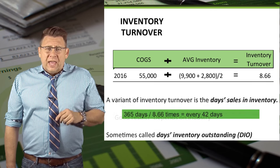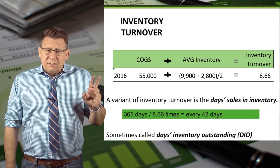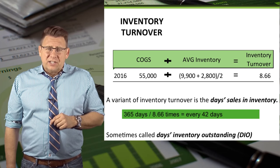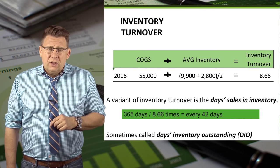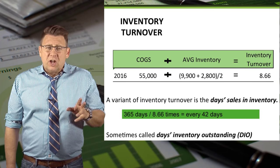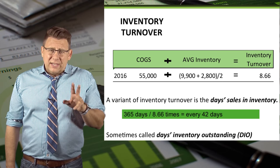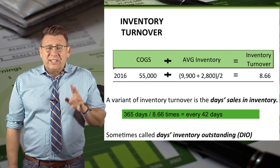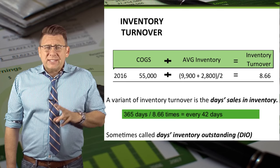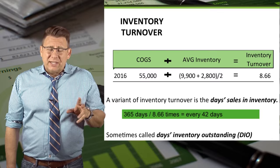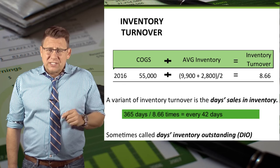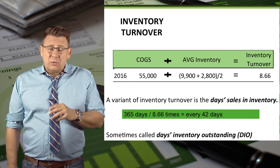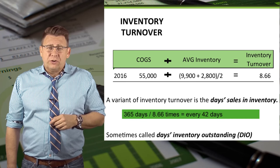A variant of inventory turnover is days sales in inventory, sometimes called days inventory outstanding or DIO. It is calculated by taking 365 days and dividing it by the result of inventory turnover.